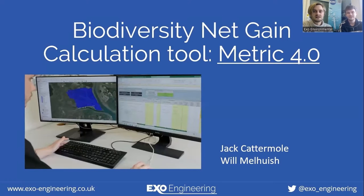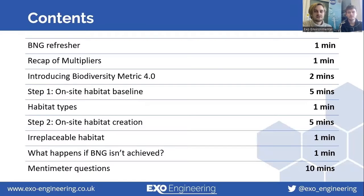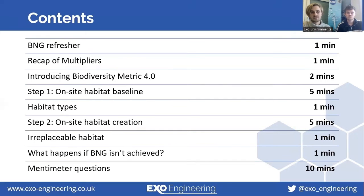I'm Will Meliwish and this is Jack Catamole. Today we will be giving a little bit of a refresher to the biodiversity net gain legislation, which we covered in the last talk, and this will involve a recap of the multipliers, which is really key for understanding how biodiversity net gain will be implemented in England. We will then go through a fully worked out example so you can see how the metric is applied, and then we'll have some discussion points around the metric such as irreplaceable habitat, what happens on small sites, and what are the implications if biodiversity net gain isn't achieved. Without further ado I will hand over to Jack to go through the metric portal.